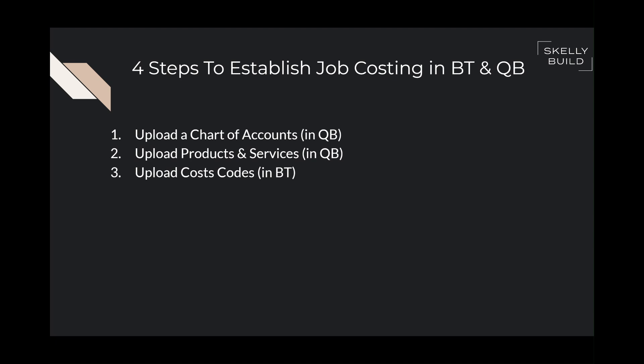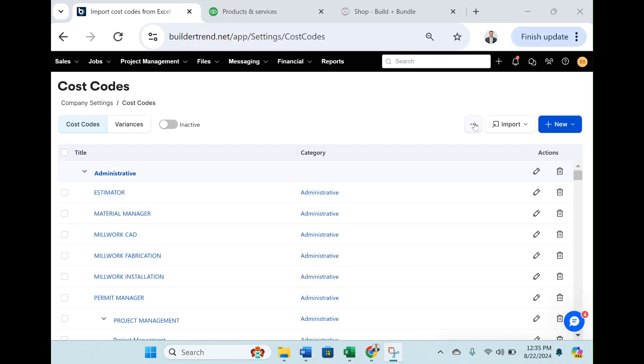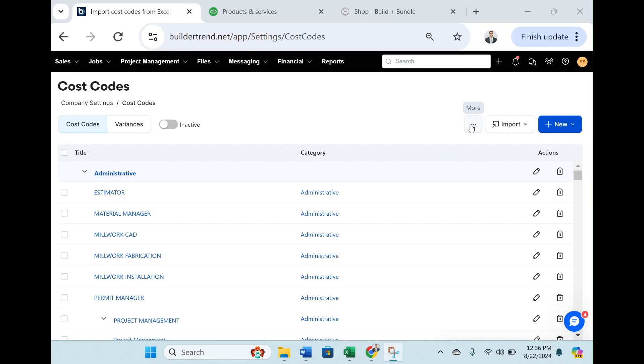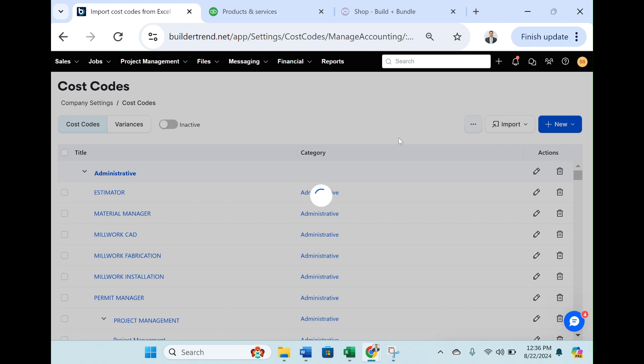Now we're done with Step 3. So far we've uploaded the chart of accounts in QuickBooks, uploaded products and services in QuickBooks, and uploaded the cost codes in BuilderTrend. The final step is to manage the QuickBooks costs in BuilderTrend. Click the three dots under More, and select Manage QuickBook Codes.